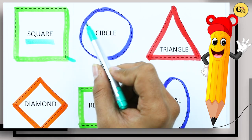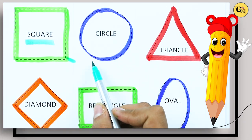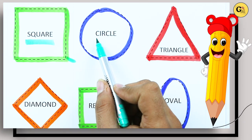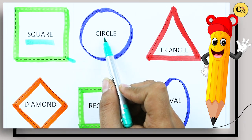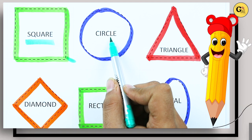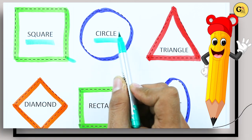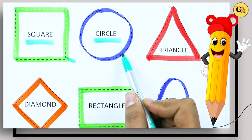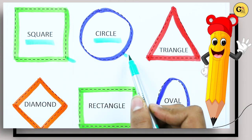Which shape is this? Circle. C-I-R-C-L-E. It's a circle with blue color.